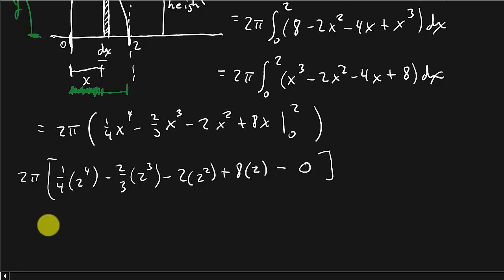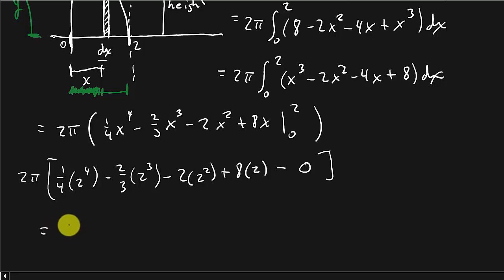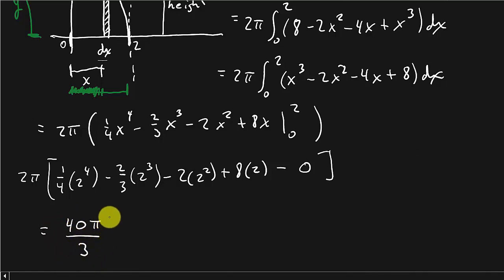Do your arithmetic or punch it into your calculator, and we will get a final answer of 40π over 3. And that's your answer.